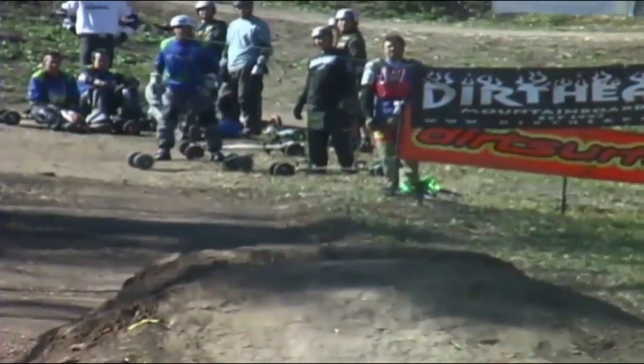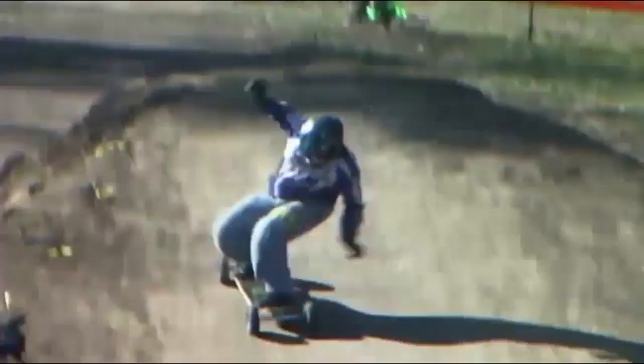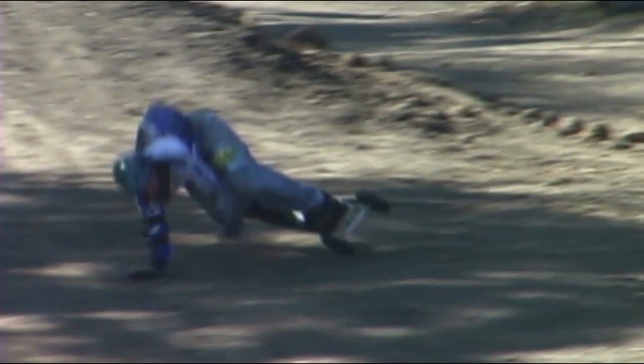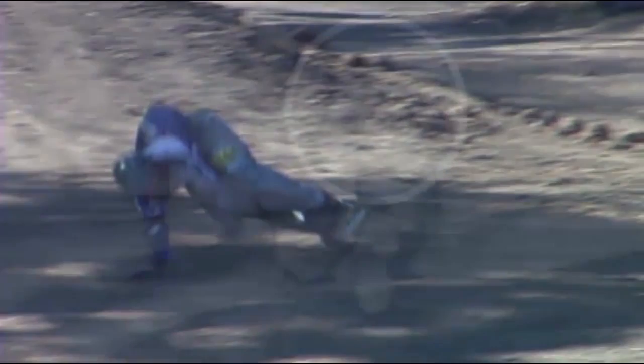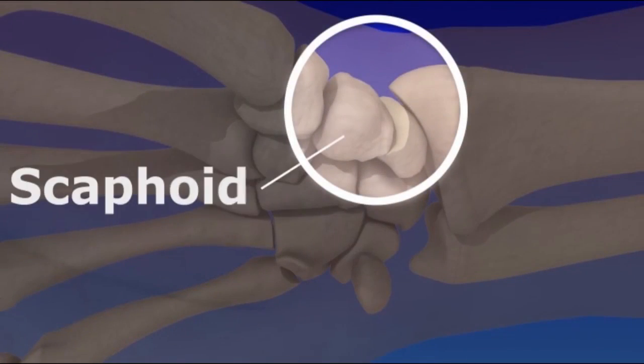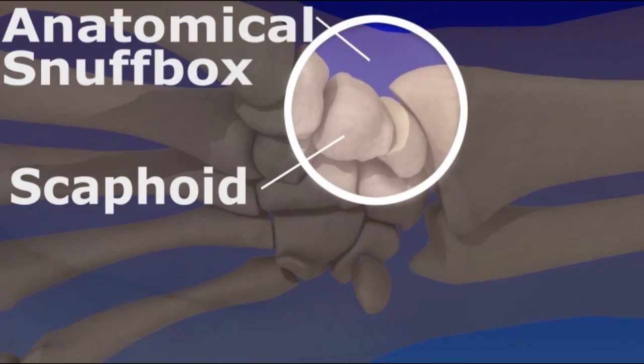Scaphoid fractures in the wrist are most frequently caused by falls onto an outstretched hand, motor vehicle crashes, and sports injuries. Symptoms include pain directly over the bone in an area known as the anatomical snuff box.